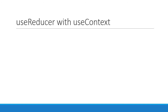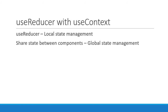So far we have seen examples with useReducer for local state management, that is at the component level. But at some point we might want to share the state between components — that is, we might want to work with global state. We can manage global state by combining useReducer along with useContext.